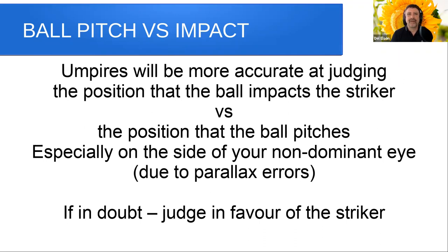Now let's consider the impact of parallax — that is judging the ball pitch versus judging the place where the ball impacts the batter. Umpires will be more accurate at judging the position the ball impacts the striker than judging the position the ball pitches, especially on the side of your non-dominant eye. Being a right-eye dominant umpire, I am more certain of where the ball strikes the batter than where the ball lands on the pitch. I may make occasional parallax errors judging the pitch of the ball, but I am less likely to make those same errors judging the impact position. If in doubt, judge in favour of the striker.